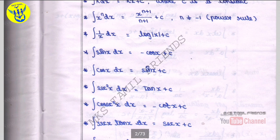Integral cosec square x dx is equal to minus cot x plus c.